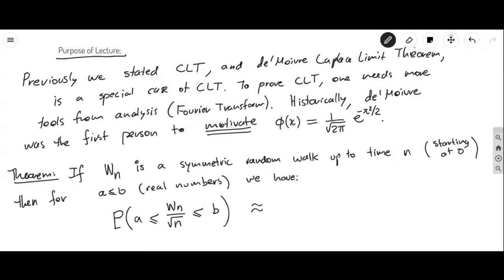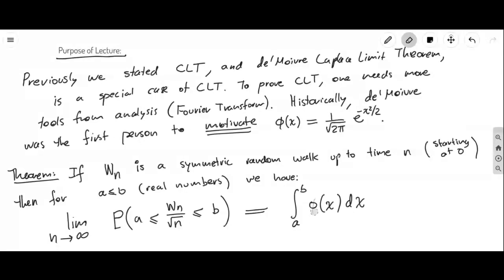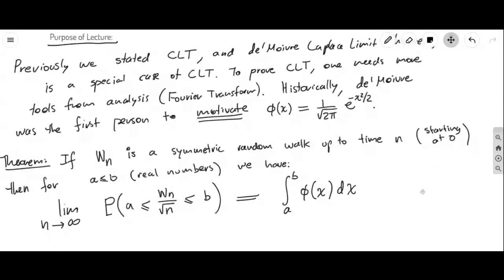the probability that the standardized random walk falls between a and b can be approximated by an integral — exactly equal in the limit as n goes to infinity. This is the integral from a to b of φ(x) dx, where φ is the standard normal density function. DeMoivre did not know the constant; he got the correct function up to a constant. Later, the constant was determined to be one over the square root of 2π.